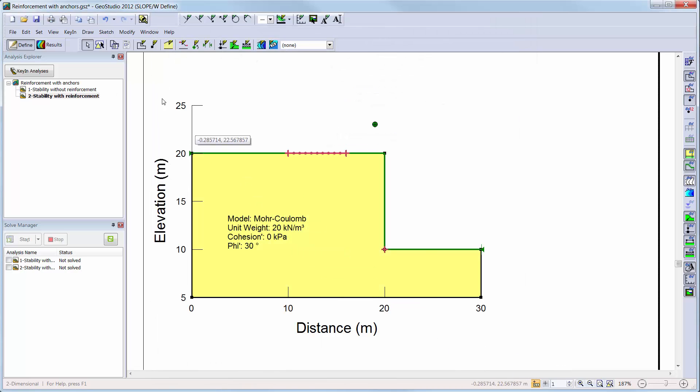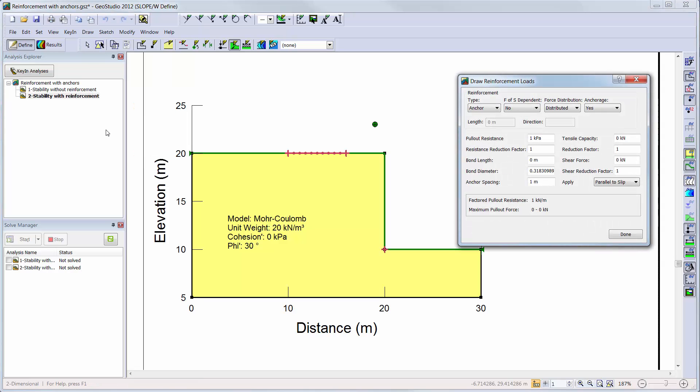Next, we will go to Draw Reinforcement Loads to add two anchors to the slope. Other reinforcement options include nails, geosynthetics, and piles. When drawing anchors as well as nails and geosynthetics, an estimation of the pull-out resistance is required. Here, we will simulate anchors that have proper anchorage with measures such as nuts and bearing plates.